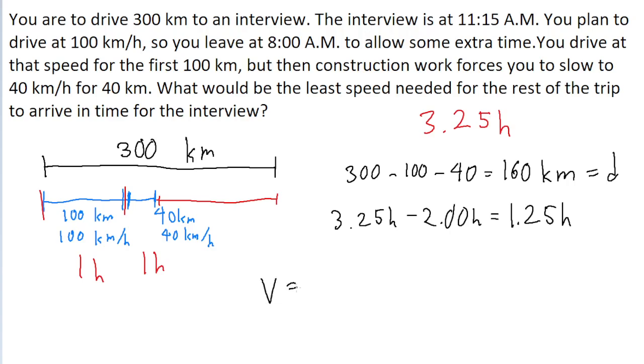The minimum required speed is just going to be equal to 160 kilometers divided by 1.25 hours, which if we put into a calculator, we find to be 128 kilometers per hour.